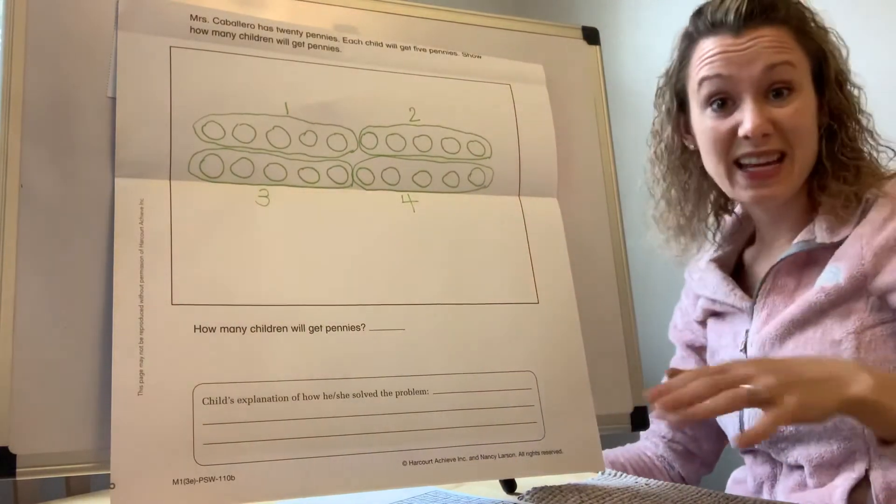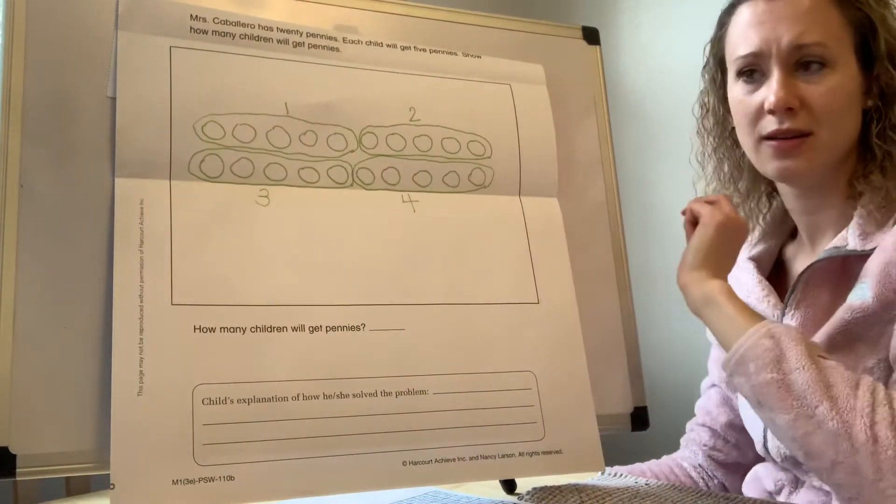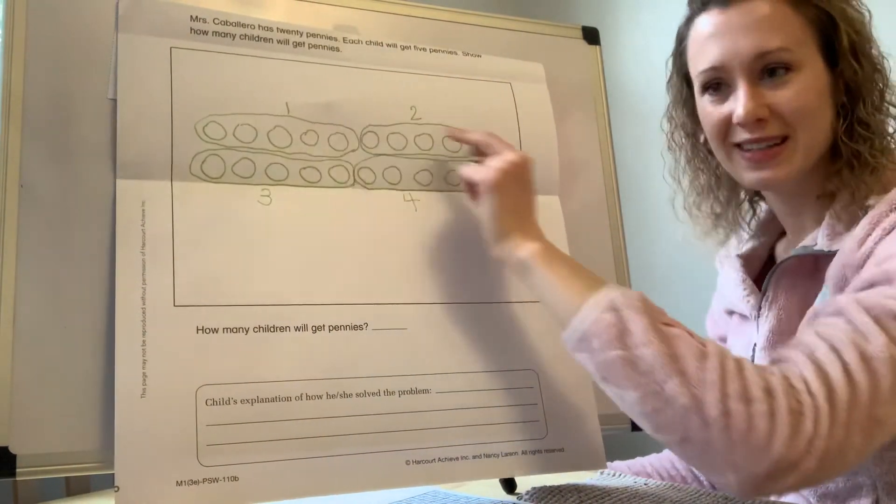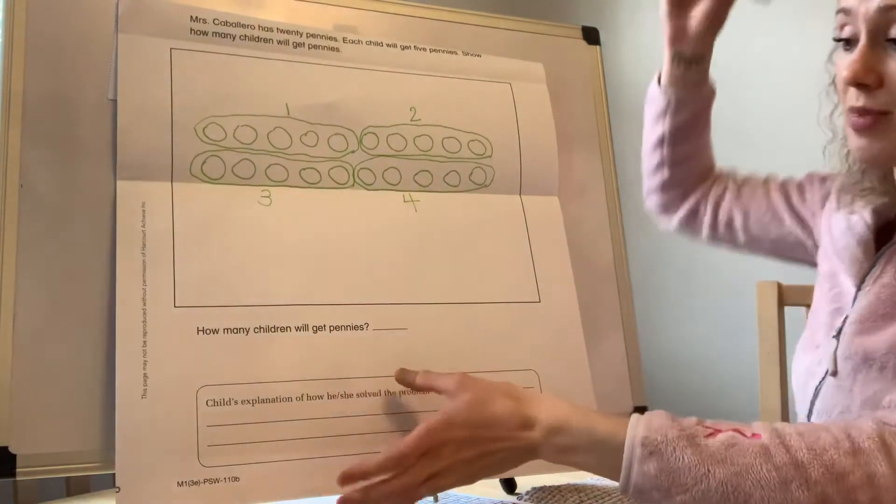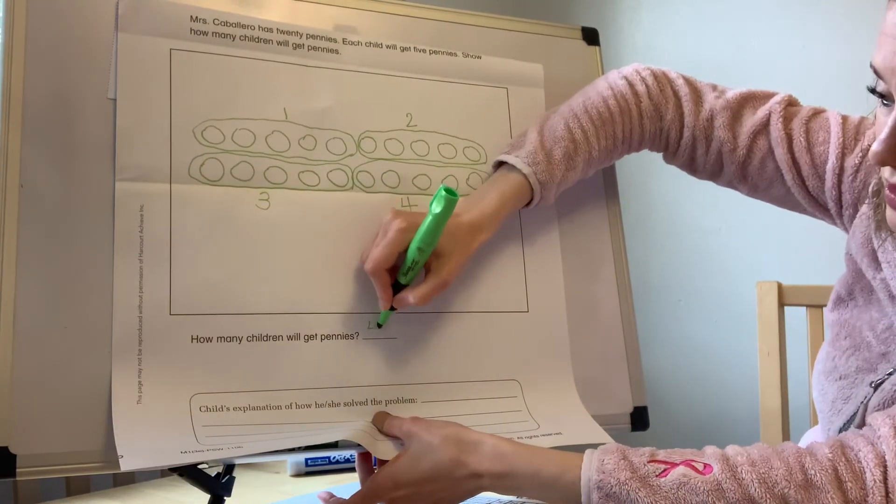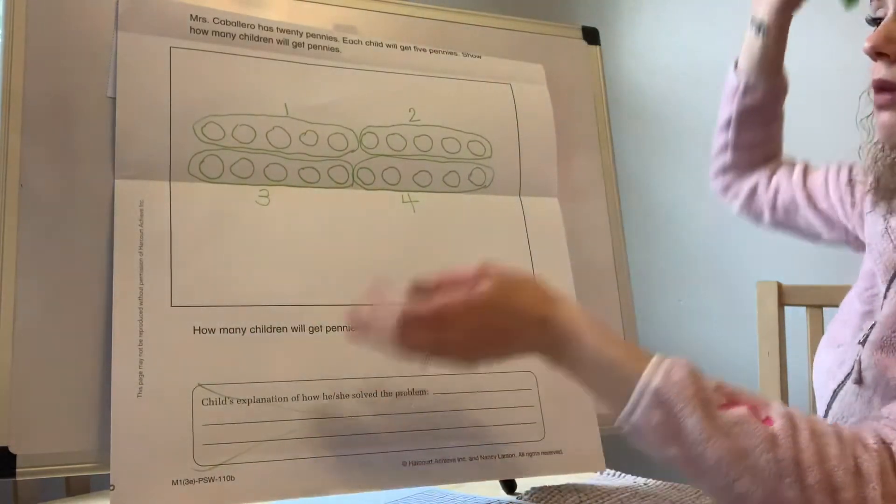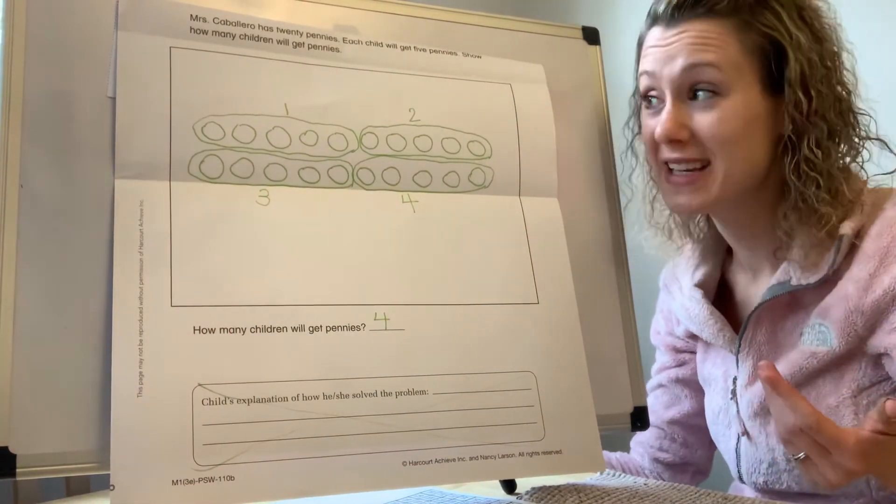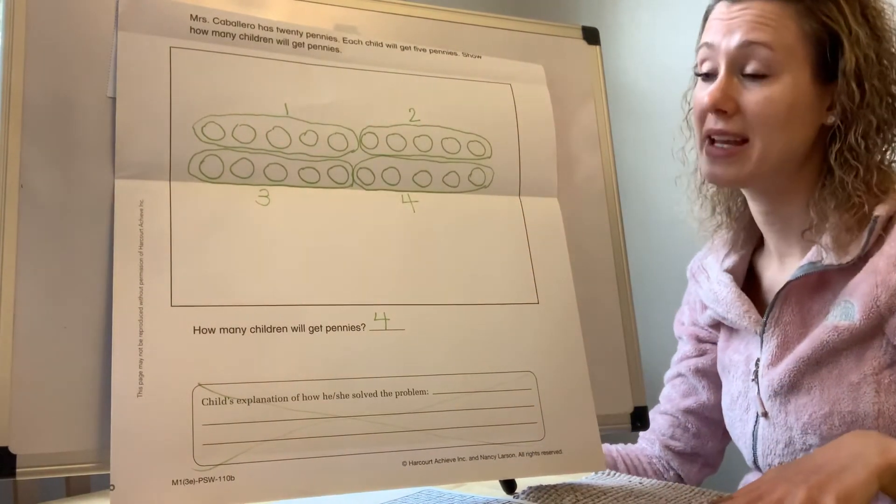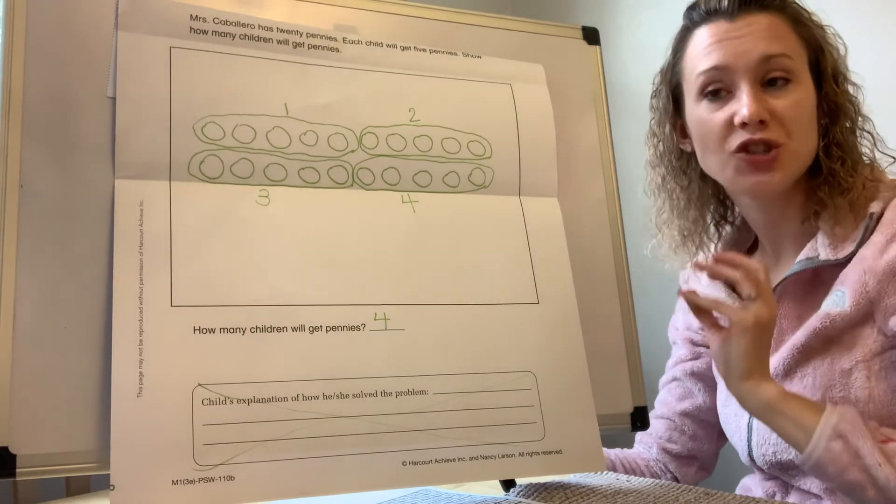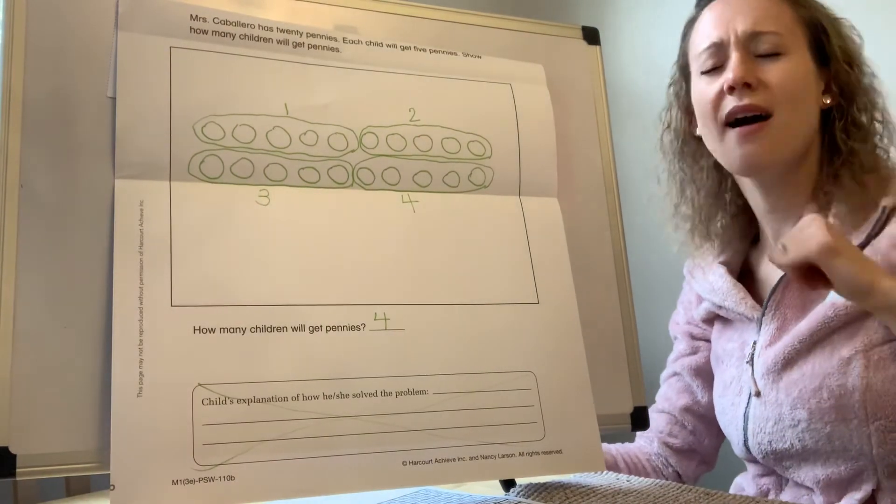So now the last thing is down here. It says how many children will get pennies? Well, you know. How many circles? One child, two children, three children, four children get pennies. So we need to write a four down here on this little line. And you know what to do with this box. All right. My dears, that was it. We made how many objects there were, pencils or pennies. And then we circled the ones that would go with each child. And then we figured out how many children would get pencils or pennies. Say piece of cake.